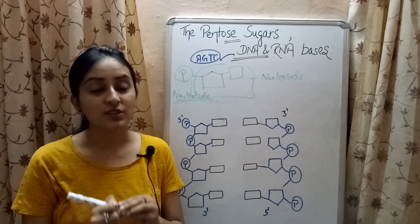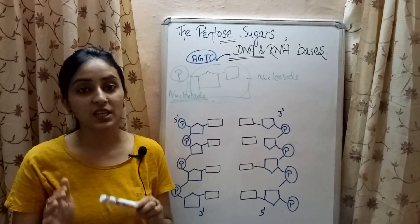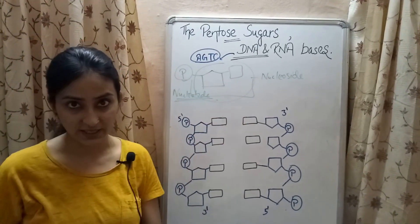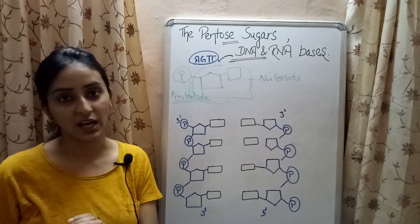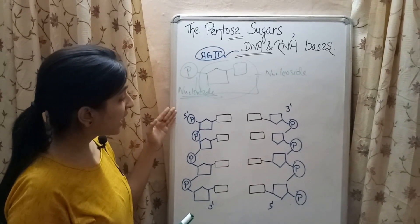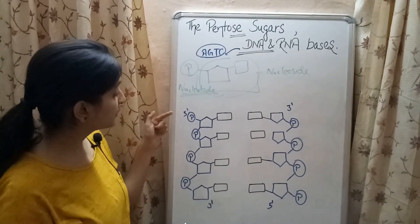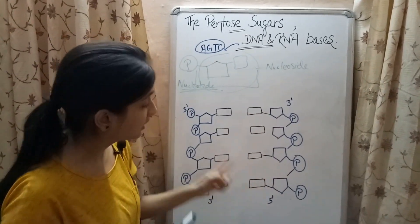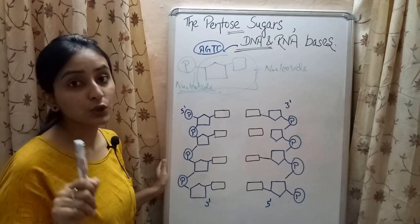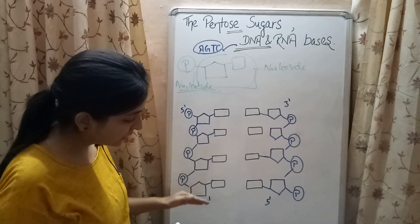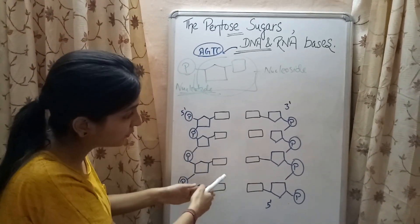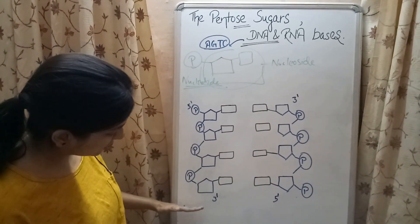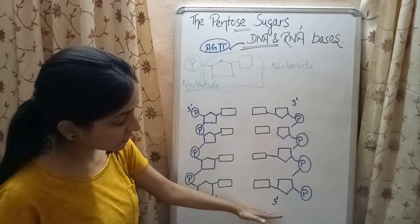According to the double helical structure of DNA proposed by James Watson and Francis Crick, DNA consists of two polynucleotide chains having antiparallel polarity. That means if the polarity of one strand is in the order 5' to 3', then the polarity of the other strand will be 3' to 5'. Since DNA is a polymer of nucleotides, many nucleotides combine together to form a single strand of DNA, or rather a complete DNA molecule.